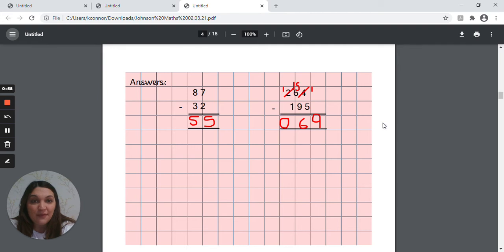The second problem however was more challenging and it involved exchanging, so you had 264 take away 195. So with the first column, the ones column, you can't take away five from four so you need to exchange from the tens column. So you can see there that the six has been replaced by five and the one that we've taken from it, or the ten that we've taken, has been carried over to turn the four into fourteen, and fourteen take away five would have left us with nine.